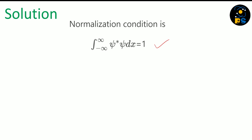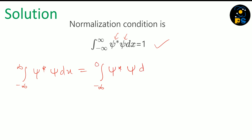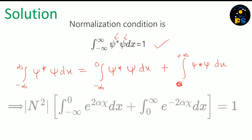We use the normalization condition, so we put the psi value in the integral from minus infinity to infinity of psi-star times psi dx equal to 1. We can break this integral into two components: one integral from minus infinity to zero of psi-star psi dx, added to another integral from zero to plus infinity of psi-star psi dx.